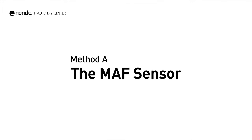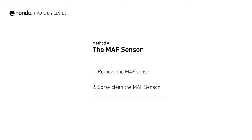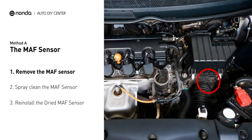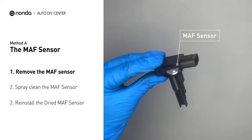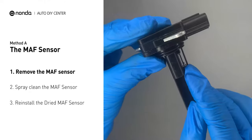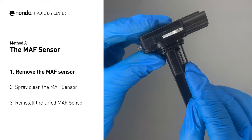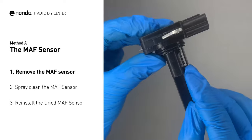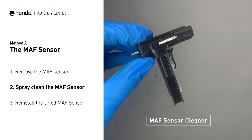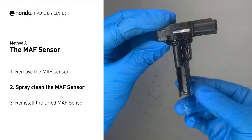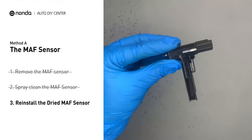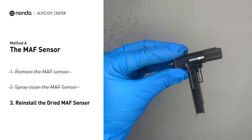Method A: MAF sensor. MAF sensors are located between the air filter and the throttle body. Carefully remove the MAF sensor from your car and do a quick inspection. The wire inside often gets dirty and needs to be cleansed. Spray the MAF sensor cleaner onto the wire perpendicularly to the ground so that it won't damage the MAF sensor. Reinstall the MAF sensor back in the car after it gets dry.